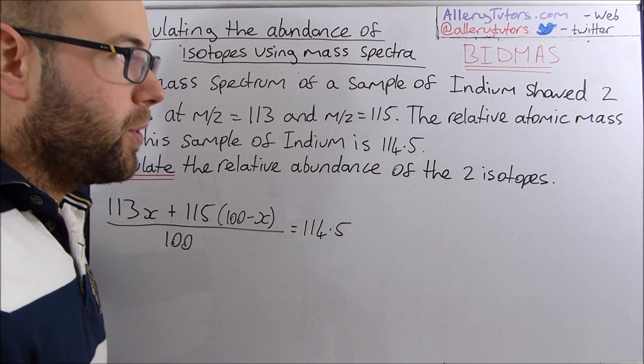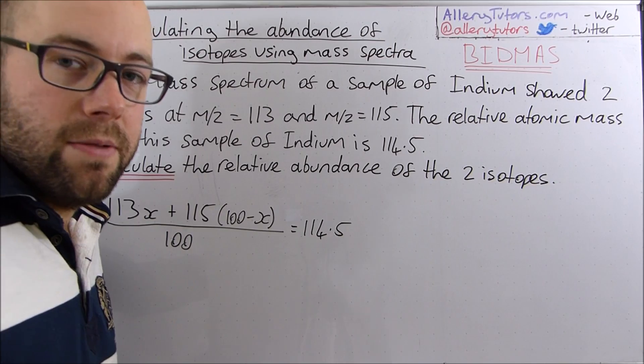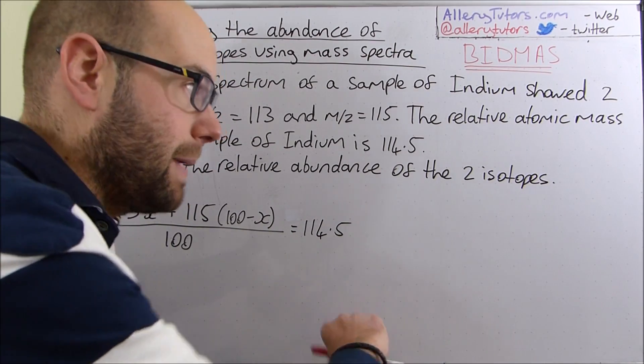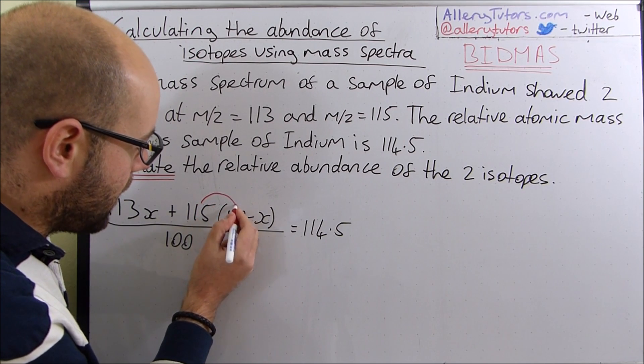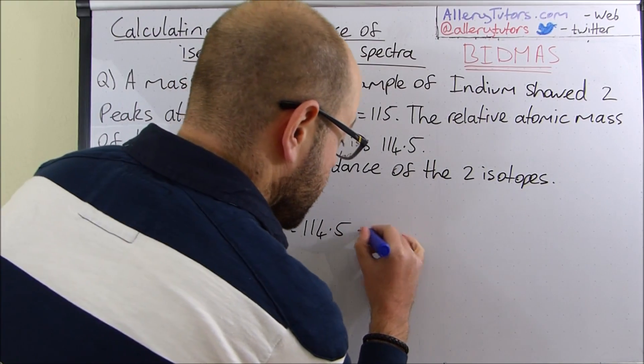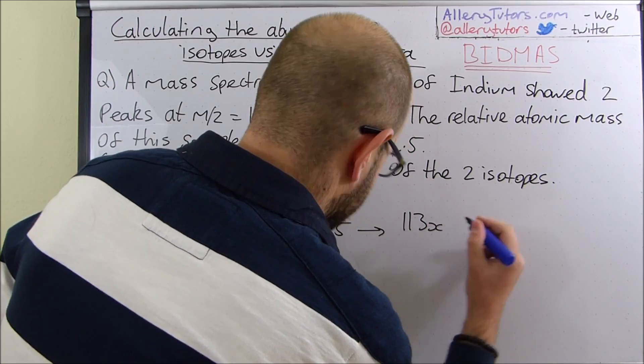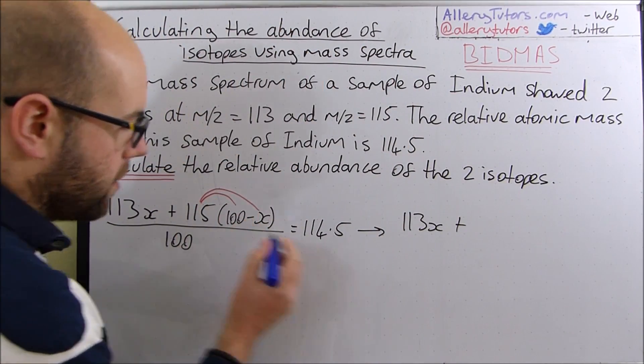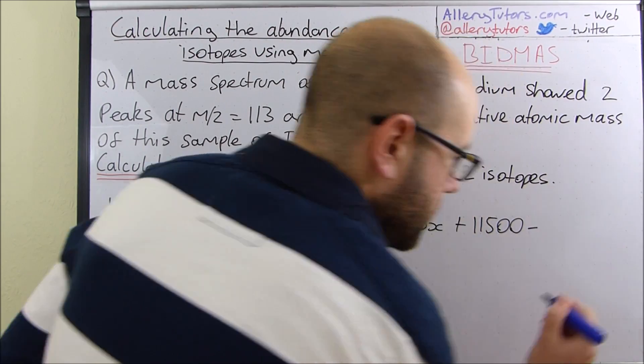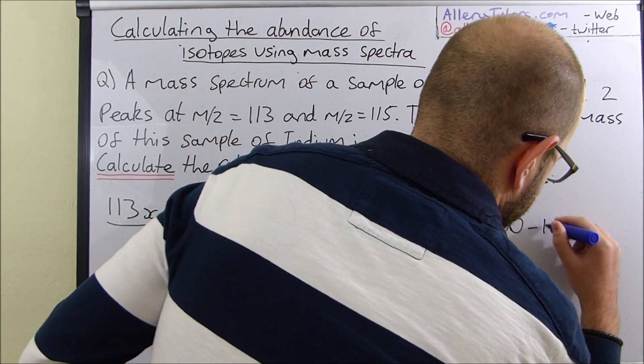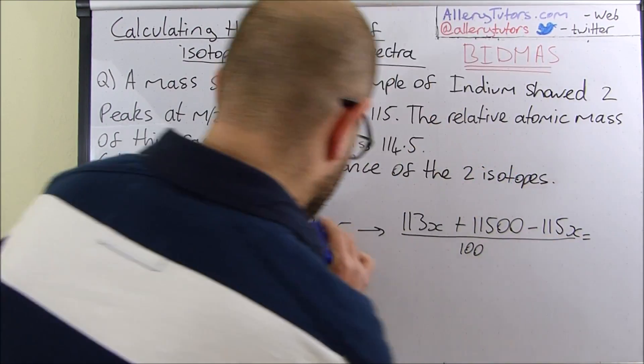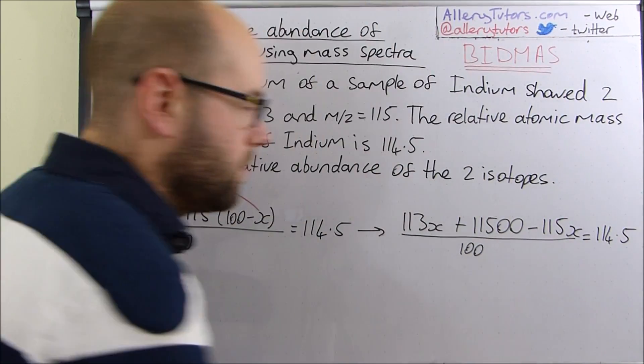This is where the BIDMAS comes in. We start with B brackets and we do have brackets so we need to sort the brackets out first. This is pretty straightforward, just expanding brackets. We've got 115 and we're going to multiply that by 100 and multiply 115 by minus X as well. So we're going to rewrite this equation. The 113X stays the same. And we're going to add 115 times 100 which is 11500 and that's going to be minus 115X. So we've expanded our bracket, divide by 100 stays the same, and that equals 114.5.